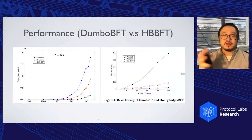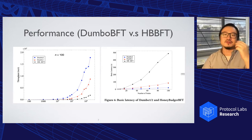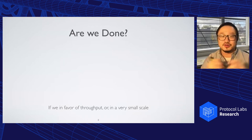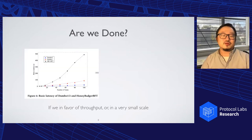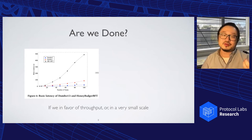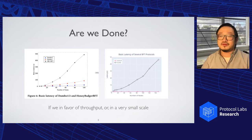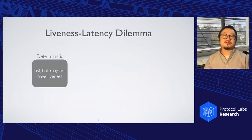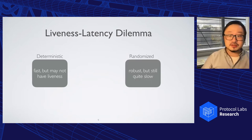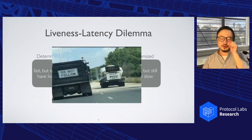So then what's next? We have a protocol much better than HoneyBadger — are we done? Unfortunately not. If we look at just the basic latency alone, Dumbo is indeed much better than HoneyBadger, but if we compare to the deterministic counterpart — for example, HotStuff — the situation becomes dramatically different. We are facing essentially a liveness-latency dilemma: deterministic protocols are usually very fast because they take just a few rounds, but they don't have liveness guarantees under asynchrony because of FLP. Randomized protocols are robust but still quite slow.